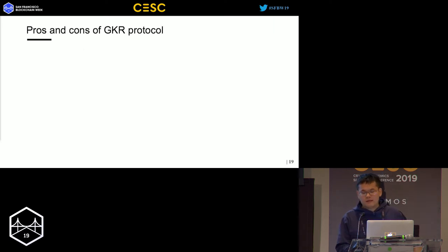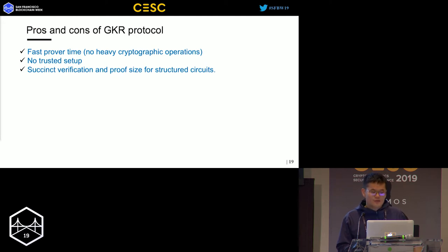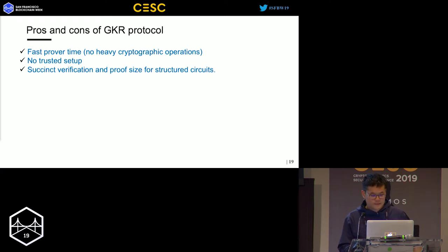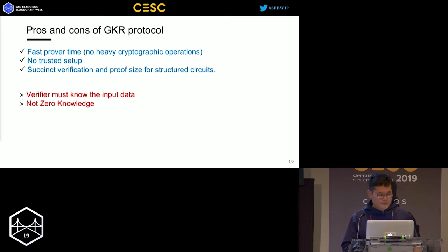Here are some pros and cons of the GKR protocol. The prover in GKR is very fast because there are no heavy cryptographic operations. It doesn't need any trusted setup, and it has succinct verification and proof size for structured circuits. However, there are also drawbacks: the verifier must know the input data and must store it, so it's obviously not zero-knowledge because the verifier knows the input itself.